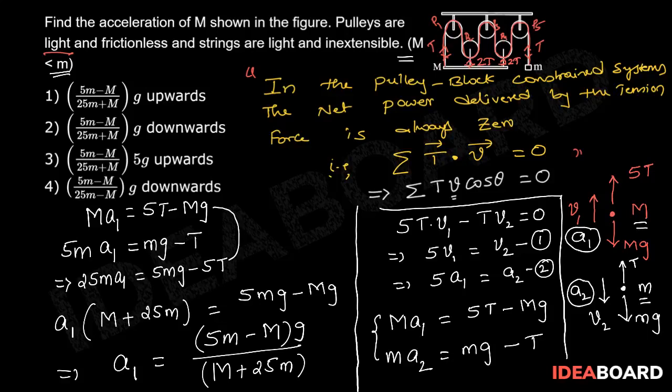we can say that capital M accelerates upwards with an acceleration of 5 small m minus capital M times G whole divided by capital M plus 25M. Therefore, the correct option is 1.